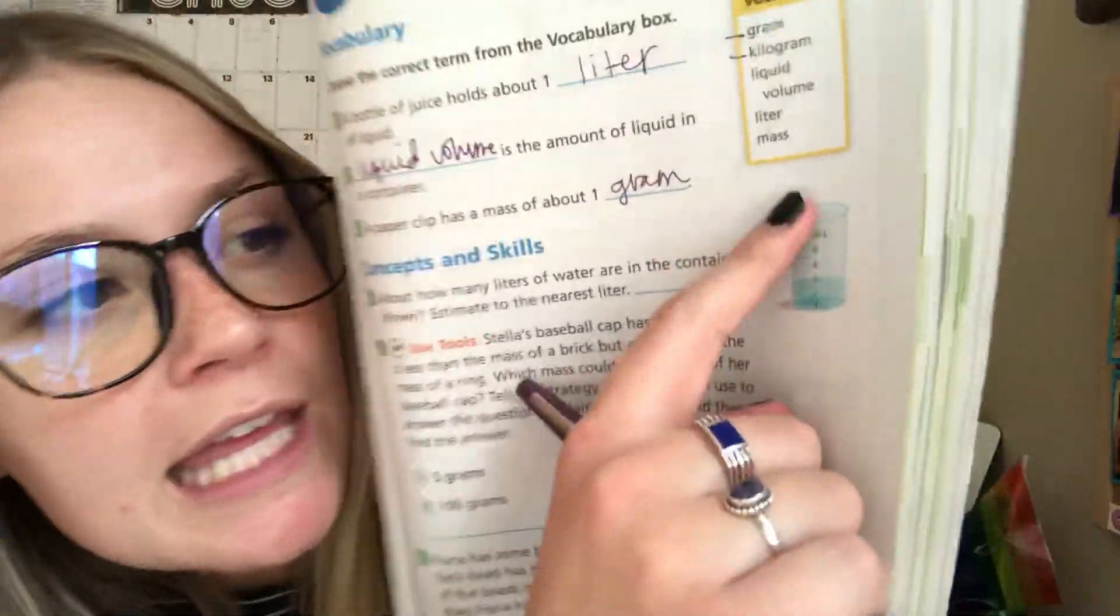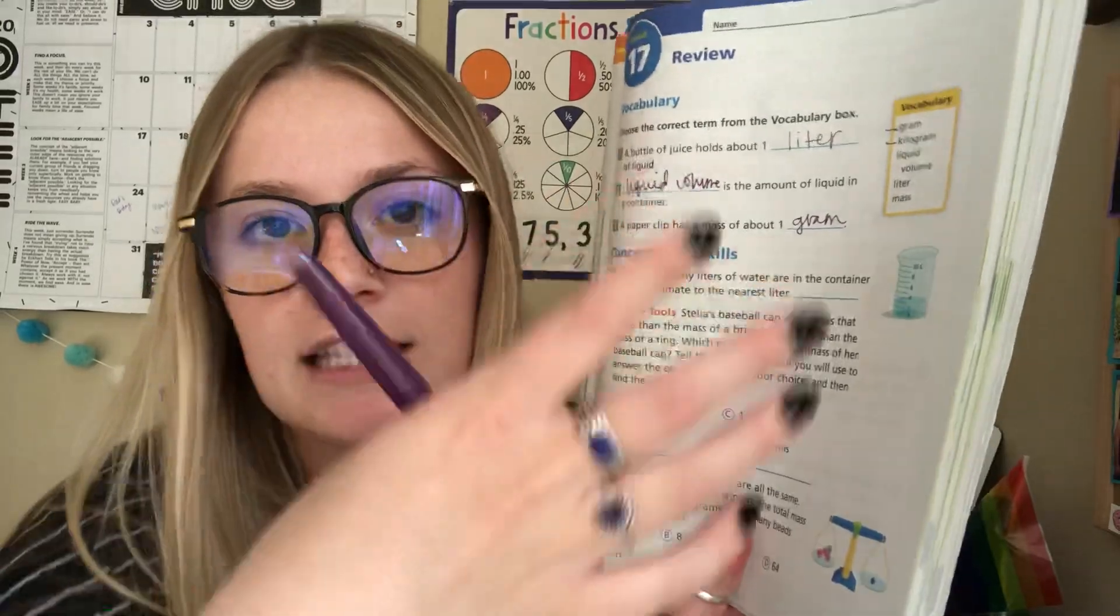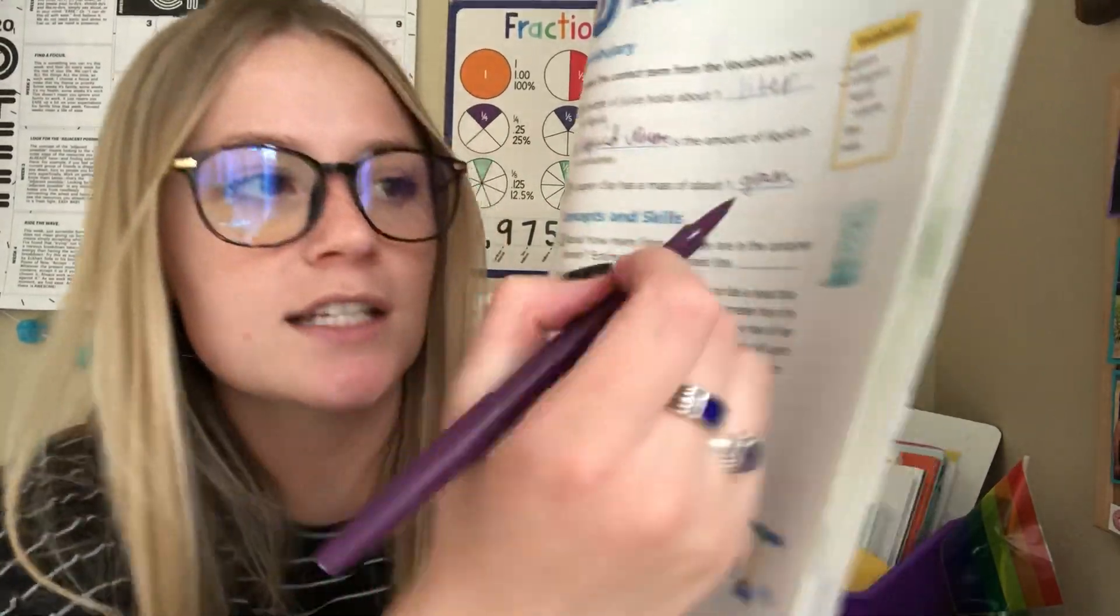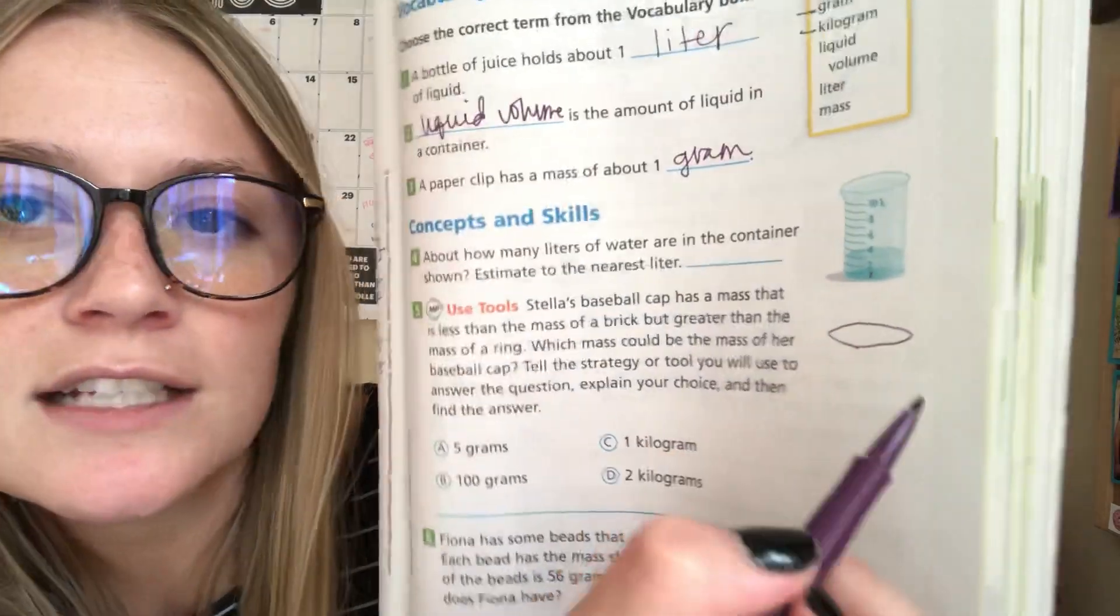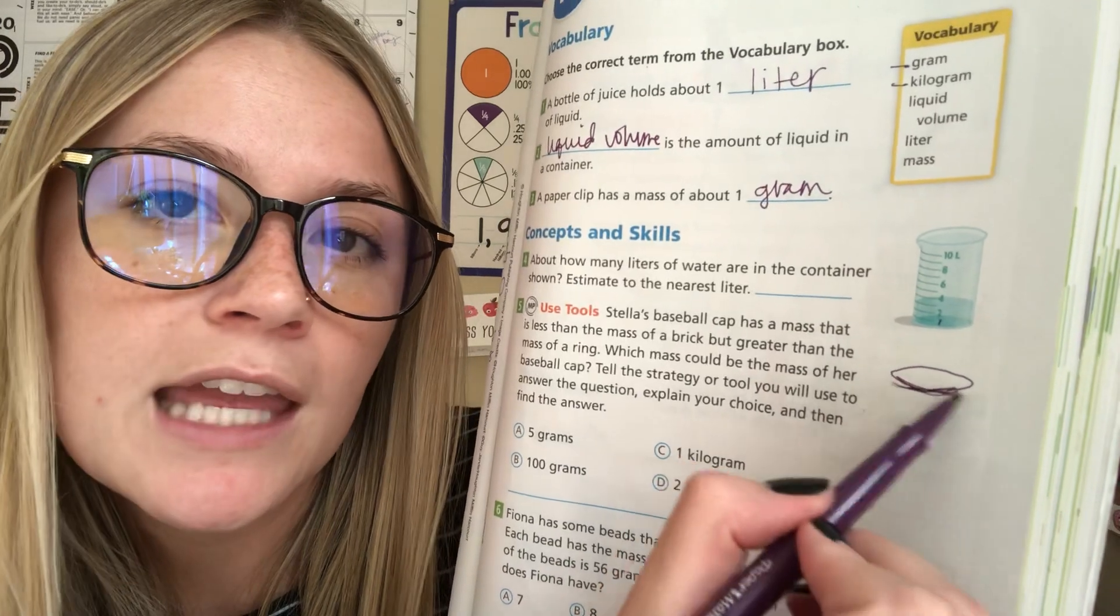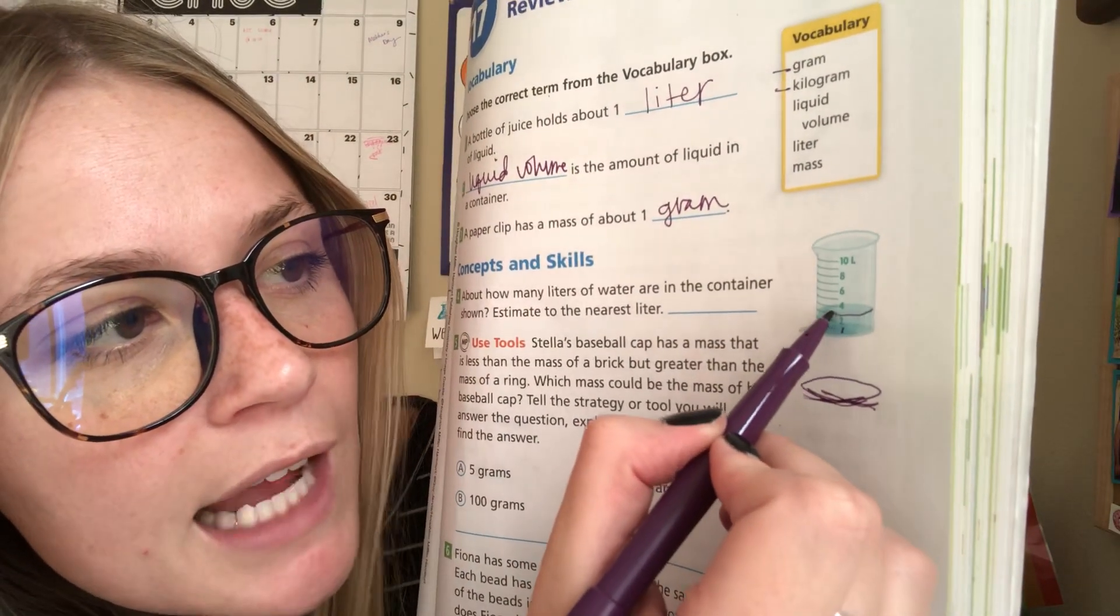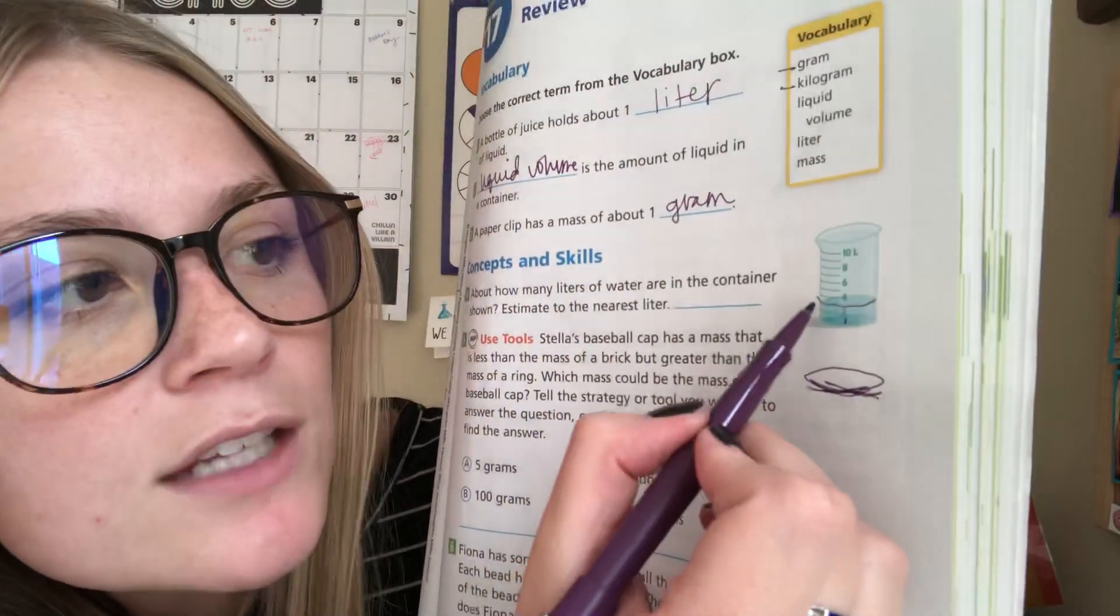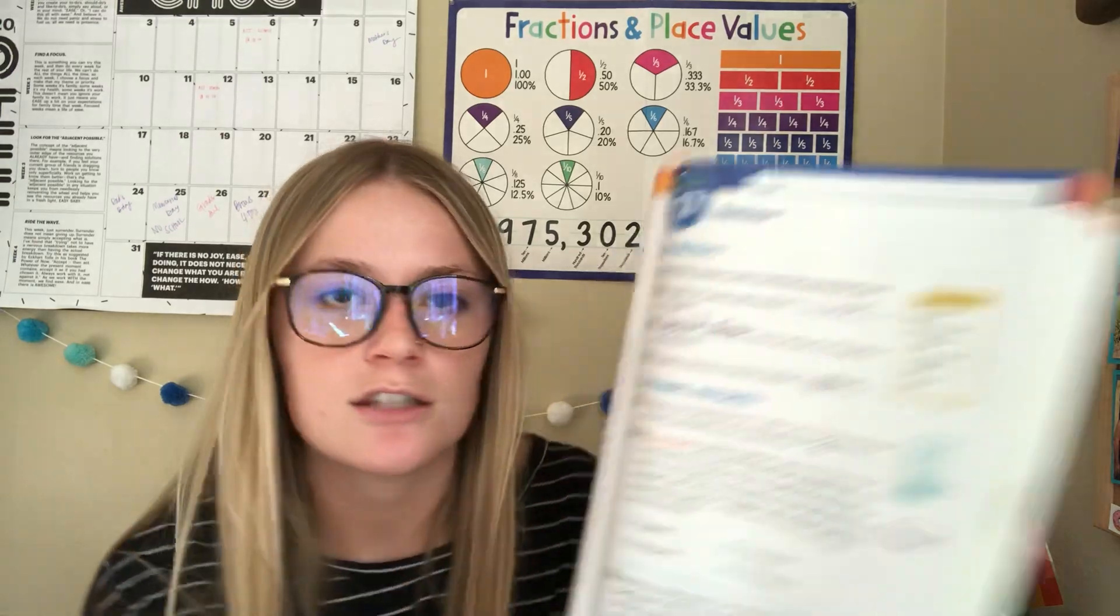And then remember, when we're looking at these containers, this picture, it's trying to show you that it's a 3D object. And so the way they drew it is like a circle to show you that it's supposed to be 3D. So we look at this front part right here to measure. So let's see where that front part is lined up. And it is right at the three. So this is three liters full.